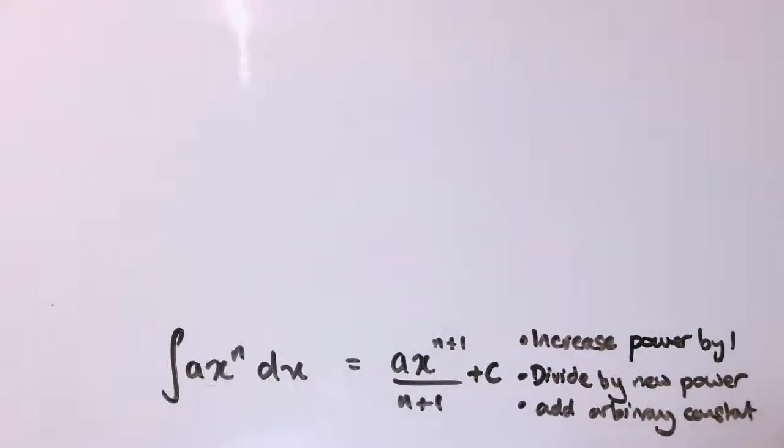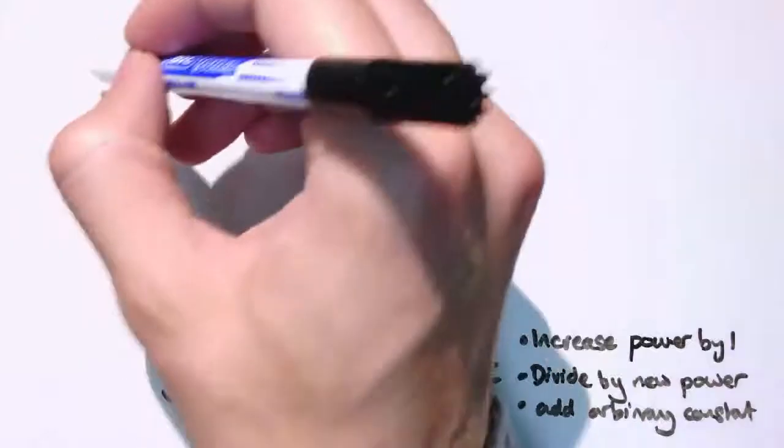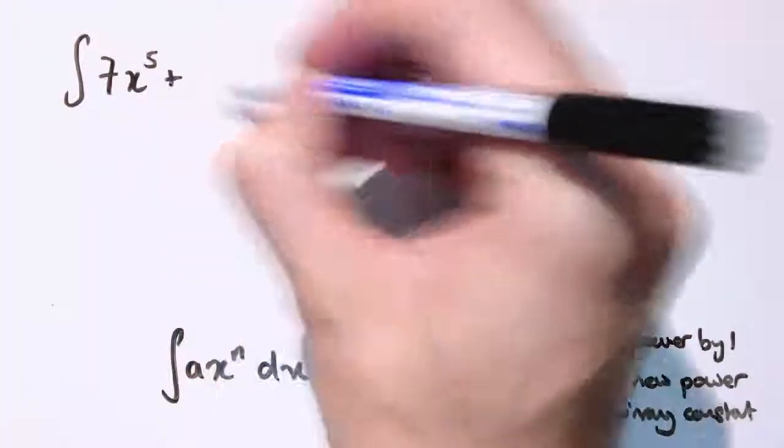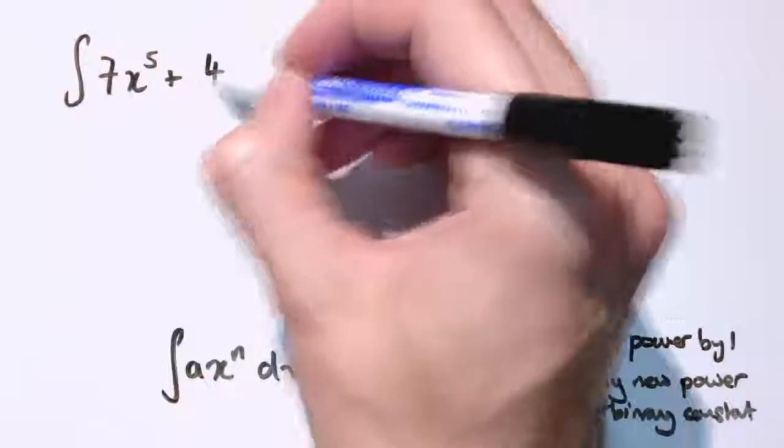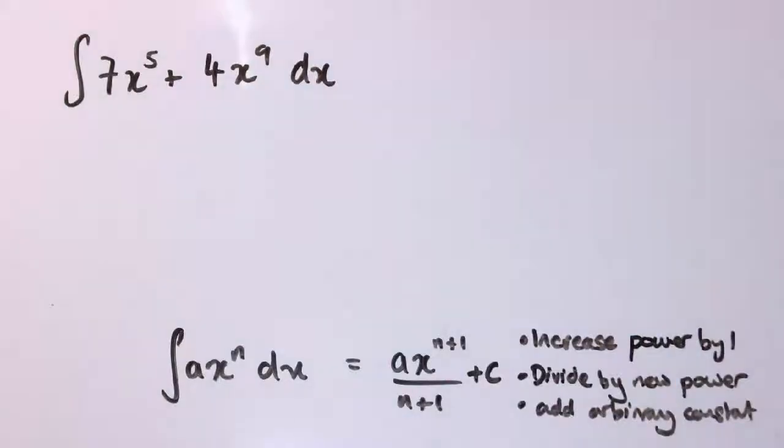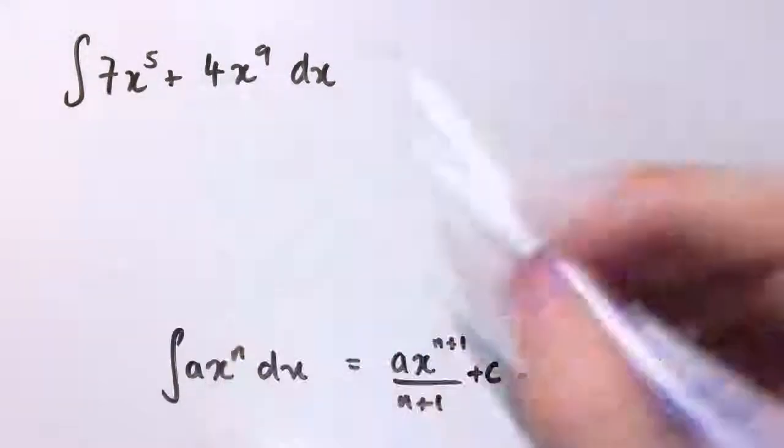We're going to look now at some further examples of this sort of thing. For example, if I have the integral of 7x to the 5 plus 4x to the 9 with respect to x, how will we do this? Well, we can integrate term by term as long as each term is of this form.